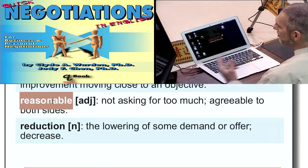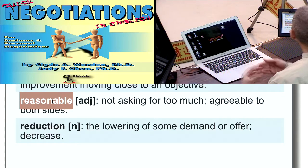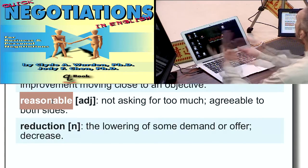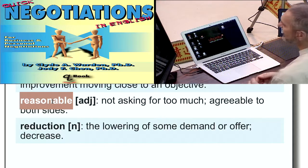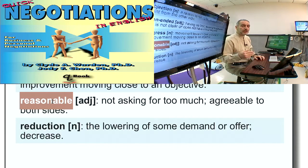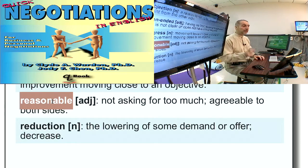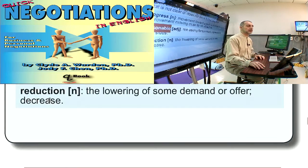Reasonable is another great word you can use in negotiation. Reasonable means that the other side or your side is not asking for too much — they're not being too extreme. It makes it easier to agree if both sides are reasonable. You can come right out and tell the other side, 'Your request on price is not reasonable. Your demand is not reasonable.' And they could respond, 'Our demand is very reasonable.' It's a great word to use in your negotiation.